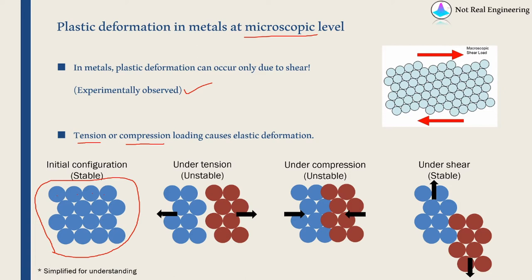If you apply a tensile load, atoms will displace — some to the right, some to the left, with a gap in between. This is not a stable position; it is unstable. Therefore, when you remove the load, atoms come back to their original position. Similarly in compression, some atoms will get squeezed into each other, but again this is not a stable position, so when you remove the load, atoms return to their initial position.